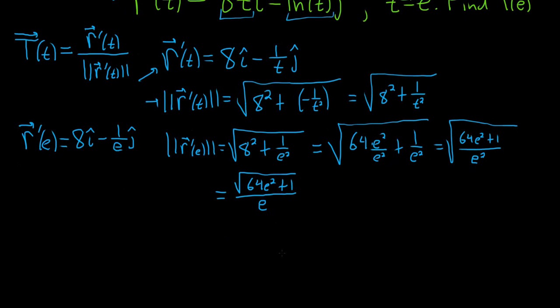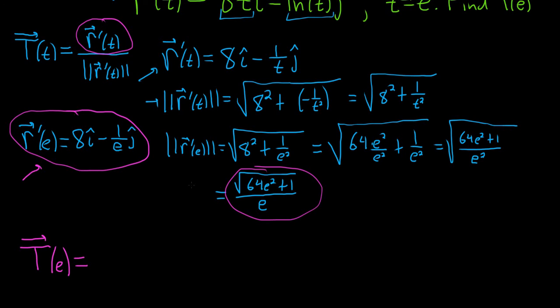All right, so now we can really think about what's going on. We're basically going to take this, which is the top part, and then divide it by this. So let's see. The unit tangent vector at e is equal to, so it's this piece, and it's being divided by this.